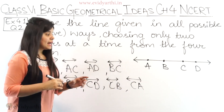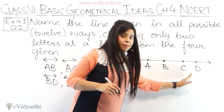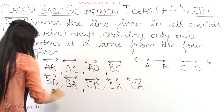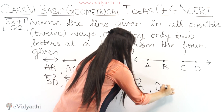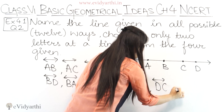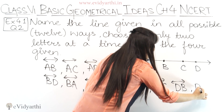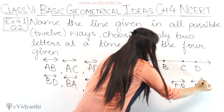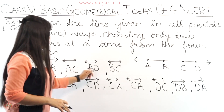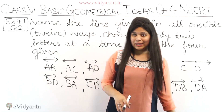Now the last point is D. So we have D to B — let's write it here — DB, then we have D to C, and then we have D to A. Now this is DA. Let's count them: 1, 2, 3, 4, 5, 6, 7, 8, 9, 10, 11, 12.